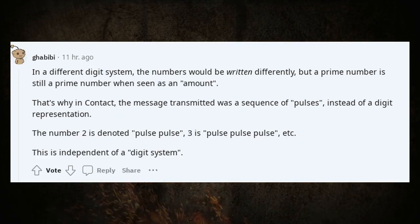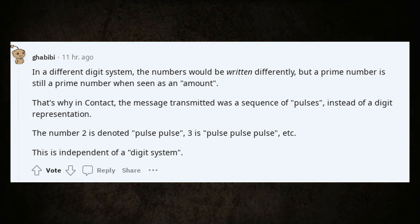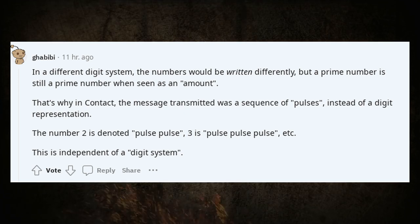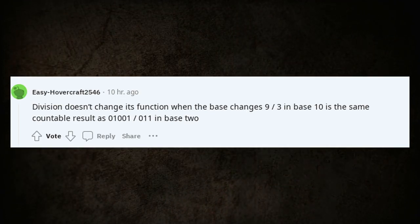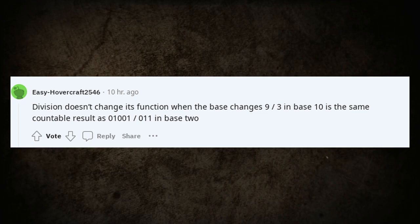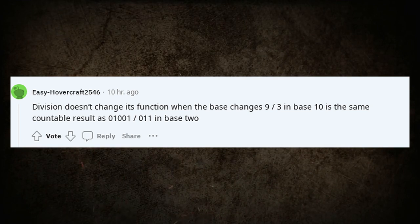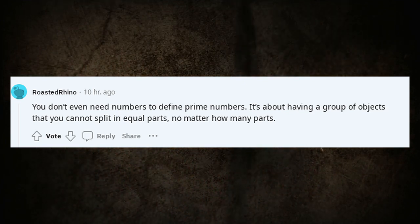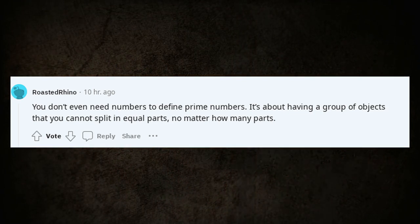The base doesn't change the numerical properties of the operations. It is really just a notation. In a different digit system, the numbers would be written differently, but a prime number is still a prime number when seen as an amount. That's why in Contact, the message transmitted was a sequence of pulses instead of a digit representation. The number 2 is denoted pulse pulse. 3 is pulse pulse pulse, etc. This is independent of a digit system. Division doesn't change its function when the base changes. You don't even need numbers to define prime numbers. It's about having a group of objects that you cannot split in equal parts, no matter how many parts.